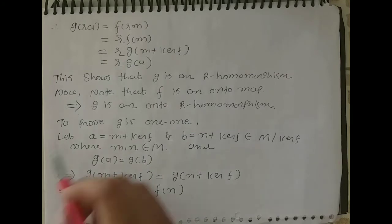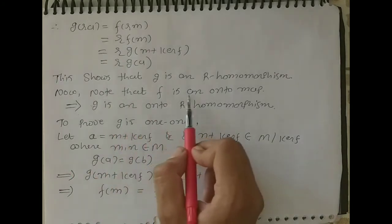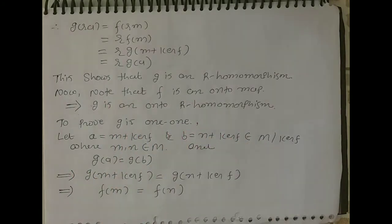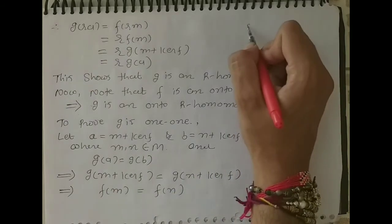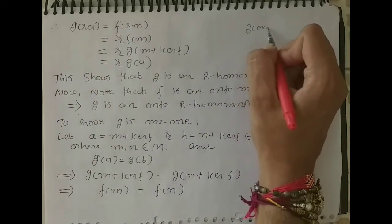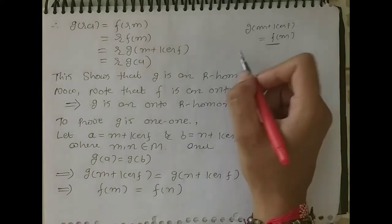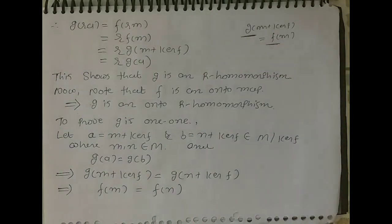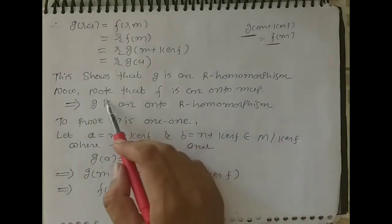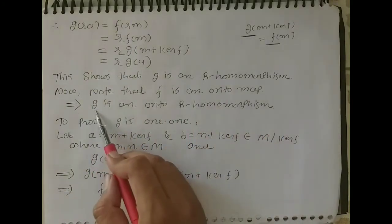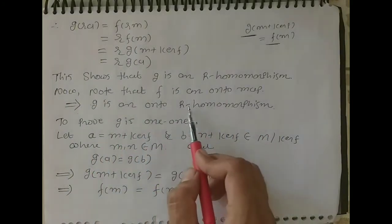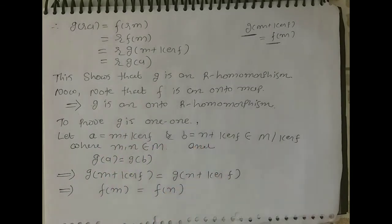Now we show that G is onto. Note that F is an onto map. Since F is onto, G is also an onto map. So G is an onto R-homomorphism.